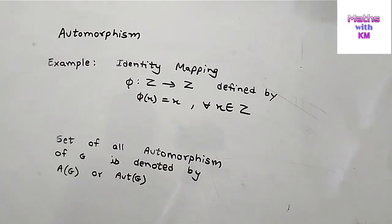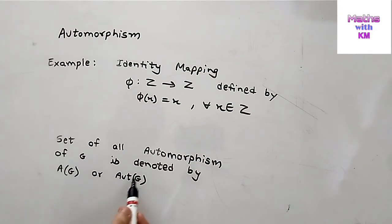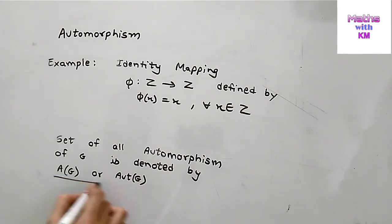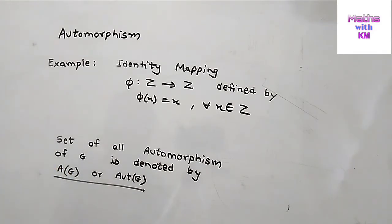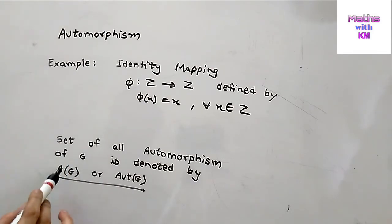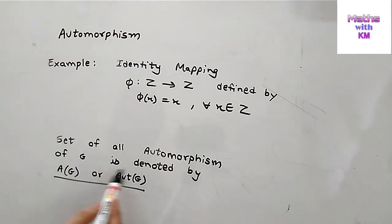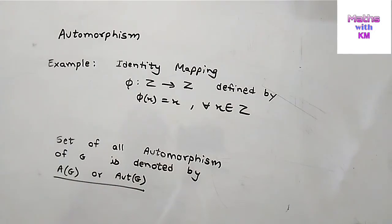The set of all automorphisms of g is denoted by A(g), which stands for automorphism of g. Whatever mapping is one-to-one, onto, and a homomorphism from g to g, we collect all such automorphisms into a set and denote it A(g). In the next video we will see what is inner automorphism. If you like this video please subscribe to my channel and give it a thumbs up. Thank you.